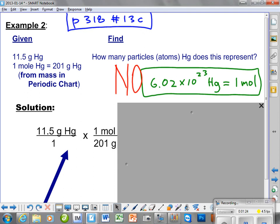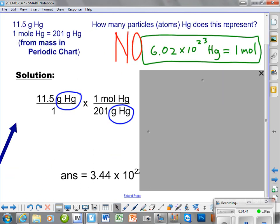Next fraction. Because we have grams of mercury here, we have to have grams of mercury down here. And this particular fraction represents the molar mass and the molar mass comes from the periodic table. So in the periodic table we find that 201 is the mass that is at the bottom of the box on the periodic chart.